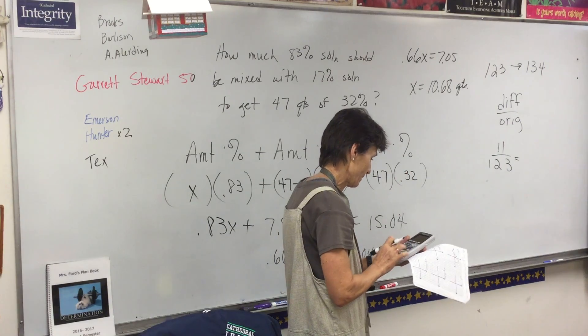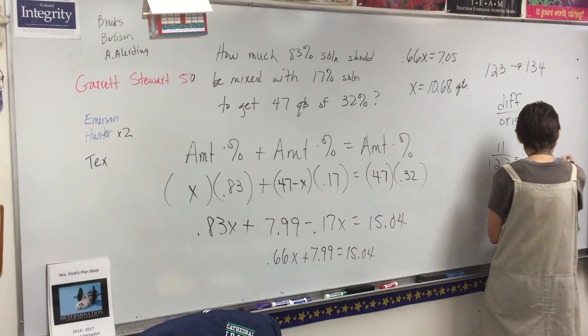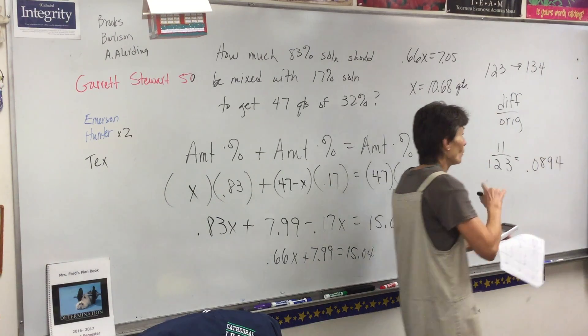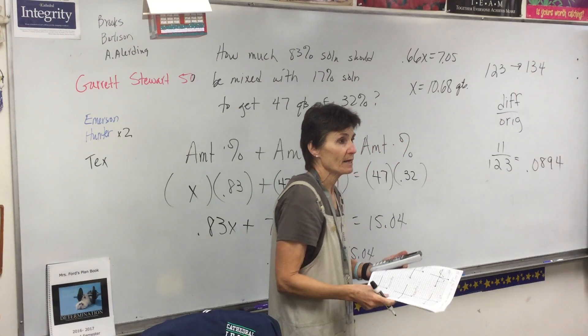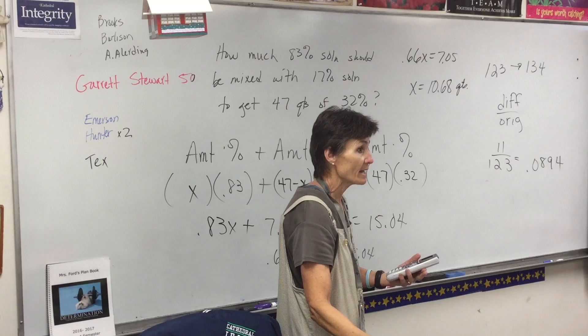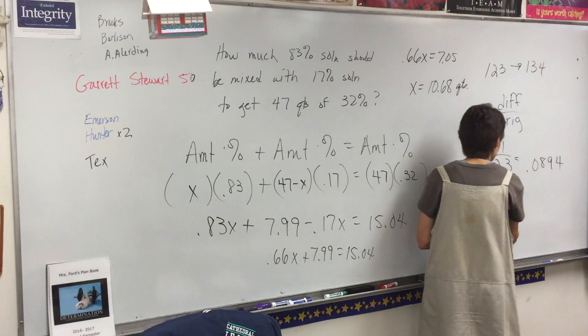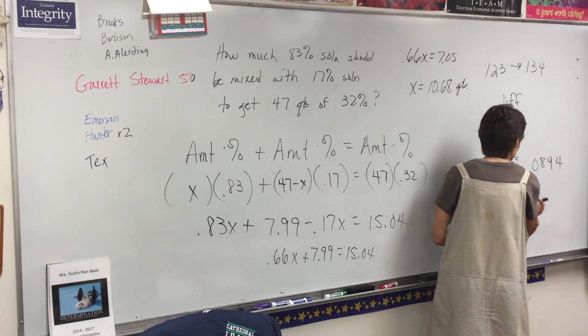So that's easy. What's the difference here? 11 divided by 123. Type it in, calculator says 0.0894. Don't write that in the answer blank because the question specifically says find the percent, so that will be 8.94 percent.